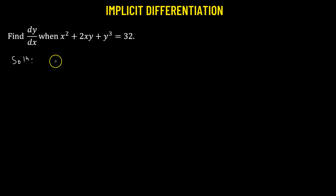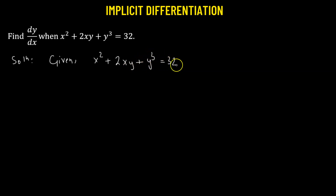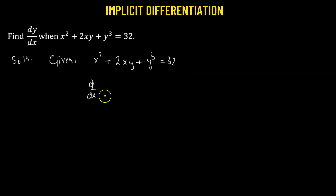We'll start with what is given to us: x squared plus 2xy plus y cubed equals 32. Let's take the derivative on both sides with respect to x, term by term.